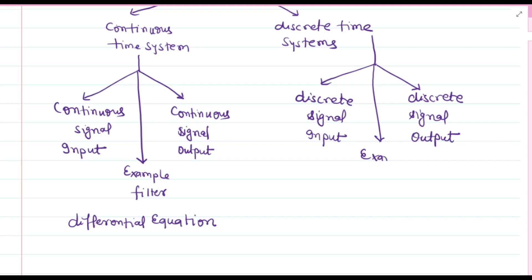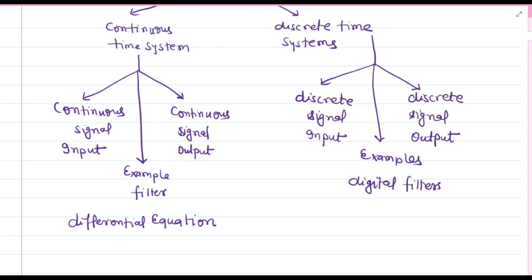We will study FIR and IIR filters in the digital signal processing course, so you don't have to worry about them right now. These digital filters are used to filter signals in digital signal processing. In mathematics, discrete time systems are represented with the help of difference equations. These equations describe how the input signal affects the output signal at each time step.